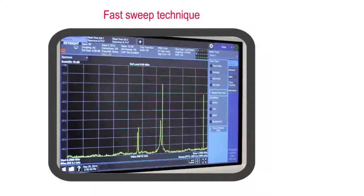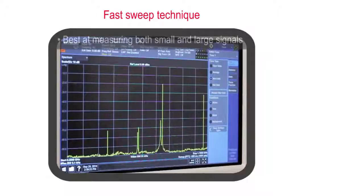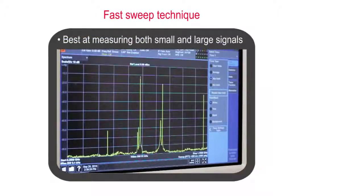First, a fast-sweep technique, which is still very useful for wideband signal environments. Using new algorithms similar to those in an ELINT receiver, we are able to fairly quickly see both low- and high-level signals.